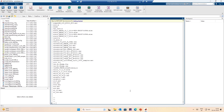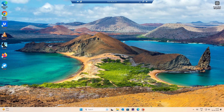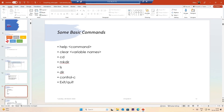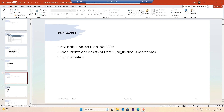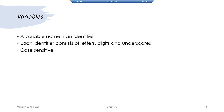And obviously there is the exit command that exits MATLAB. We will talk about variables. A variable name is an identifier — each identifier consists of letters, digits, and underscores. You can name a variable using letters, digits, and underscores. The only catch is that a variable name cannot start with a number. A digit can be part of a variable name, but a variable name cannot start with a number.